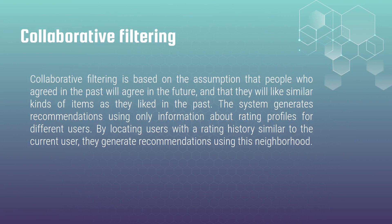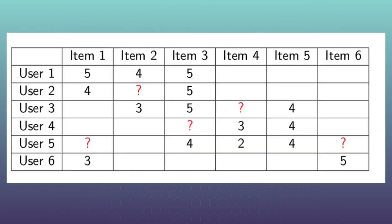Now let's return to our example with users and movies and try to explain it in human words. Collaborative filtering tries to find similarity in users' behavior. Look at user 1 and user 2 — since they are similar, as they both liked the first, second, and third items, and they both missed items 4, 5, and 6. From another side, they put similar high marks for the same films. User 1 put 5 for the first item, user 2 put 4, and the same marks are for the third item. So taking into consideration those similarities, we can assume that user 2 will put either 4 or 5 for the second item.